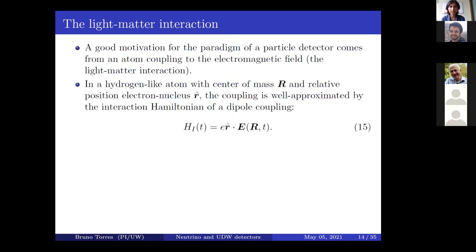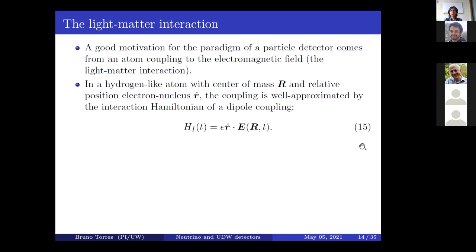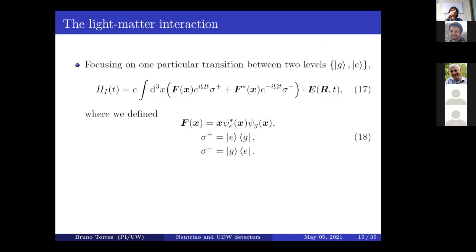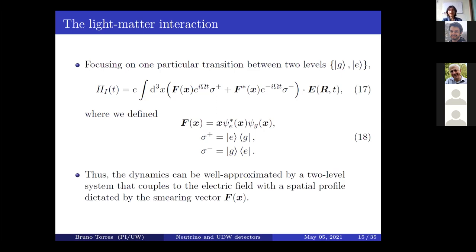The main motivation for particle detectors comes from simplifications and approximations to the light-matter interaction. In some approximation, you have a hydrogen-like atom with infinite mass treated classically. You can decompose the interaction Hamiltonian in the basis of eigenstates of the detector Hamiltonian. If you restrict yourself to one particular transition, the Hamiltonian simplifies to an electric field coupling to a smeared dipole moment, where you have raising and lowering operators of a two-level system — precisely the two levels of the atomic transition you're considering.